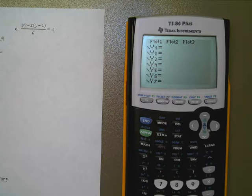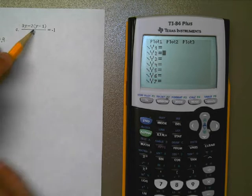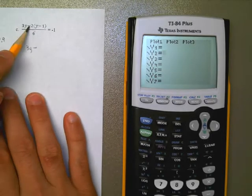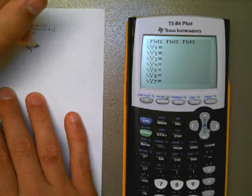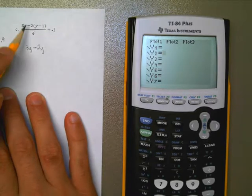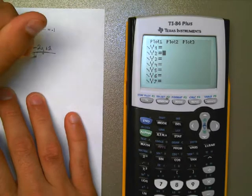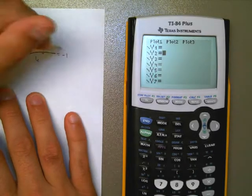Let's go ahead and do the 2 first. Let's say that I distribute this negative 2 out. I would end up with 3y minus negative 2 times a y is a negative 2y. Negative 2 times a negative 1 is a positive 2. That's all over 6, and it's equal to negative 1.